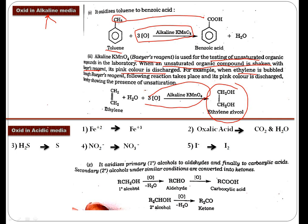In acidic medium, KMnO4 is a very strong and powerful oxidizing agent. So obviously, it can convert Fe2+ to Fe3+, ferrous salts to ferric salts. Oxalic acid to carbon dioxide and water, very important. Hydrogen sulfide to sulfur, nitrides to nitrates, iodide to iodine.